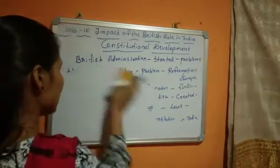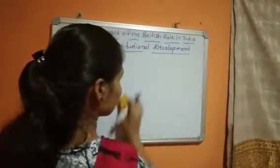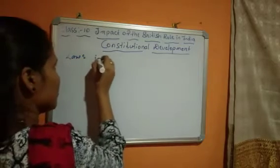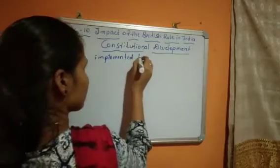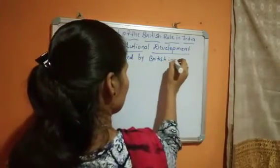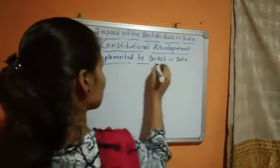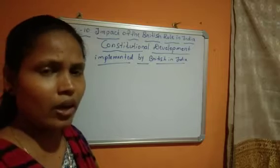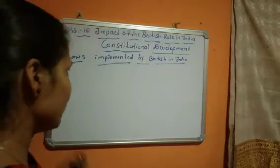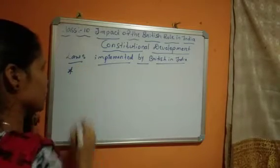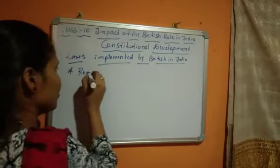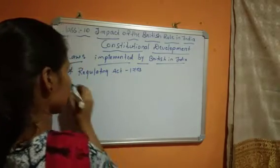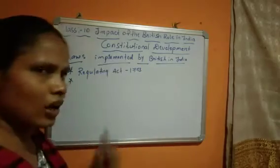Now we will learn about these laws one by one. These are the laws implemented by the British in India. The British implemented various laws to reform the administration system of India. Now we will study these laws one by one. First one: the Regulating Act.